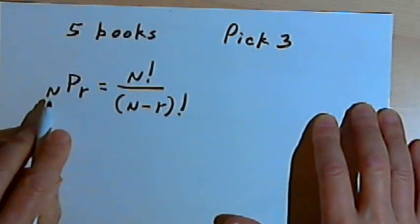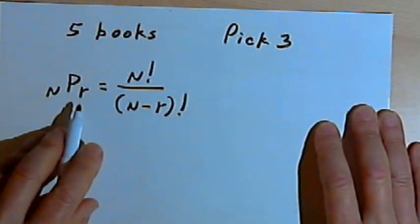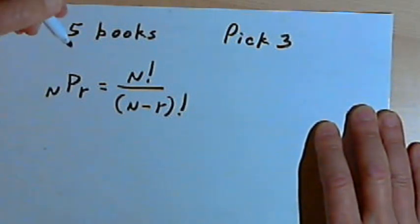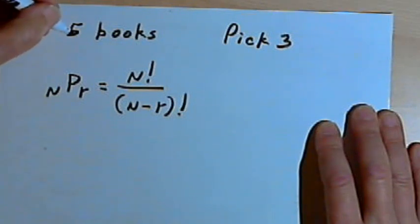Now in some places you're going to see nPk, so instead of the r you'll have a k. The formula works out the same. Here's what the letters stand for. The P is because you're doing permutations. n is the total number of elements in the set of objects you're dealing with, so in this case the total number of books.